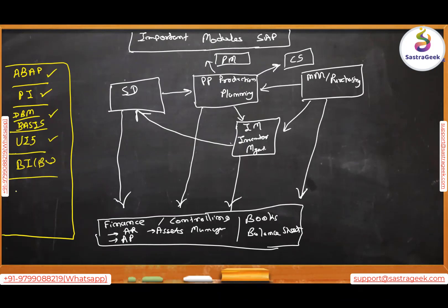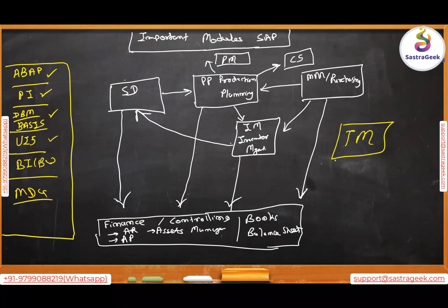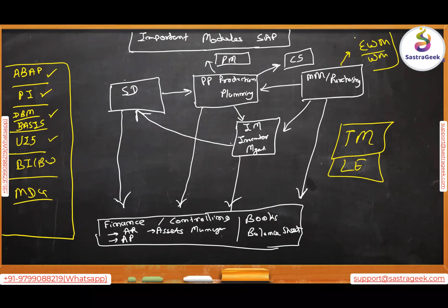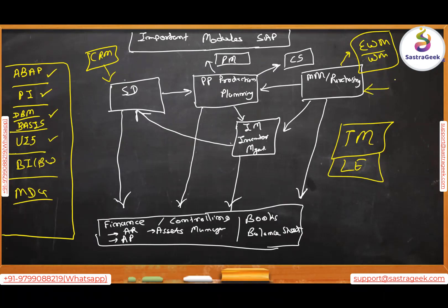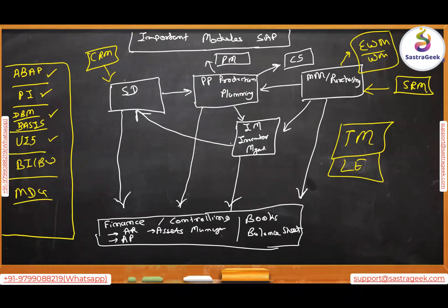There are also advanced modules developed by SAP over time for very specific functionality: MDG (Master Data Governance), Transportation Management, Logistics Execution, EWM (Extended Warehouse Management), traditional Warehouse Management, CRM for pre-sales, and SRM (Supplier Relationship Management) from the procurement side. For a normal small to mid-scale company, the core modules cover almost all requirements.